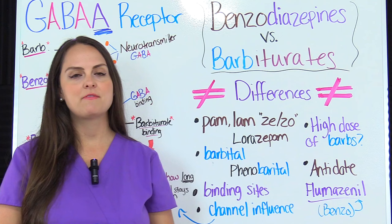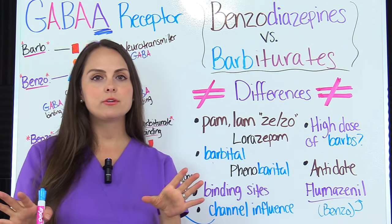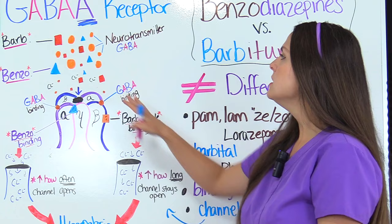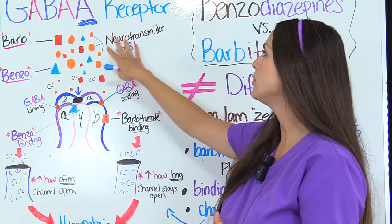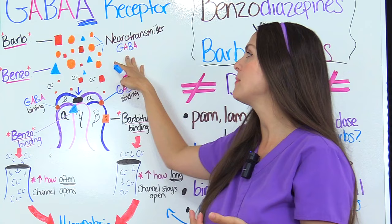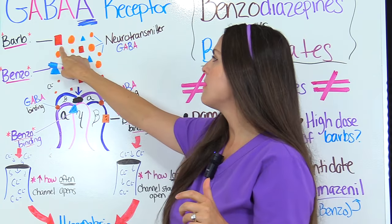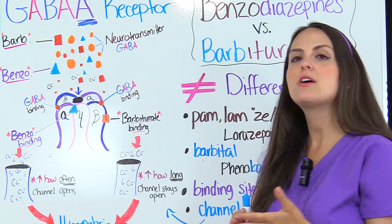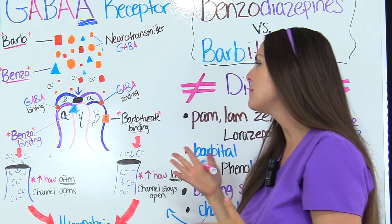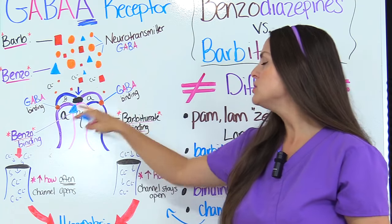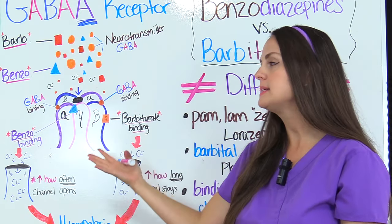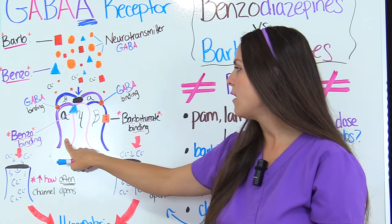Now let's talk about their mechanism of action. I pointed out in the similarities that they both influence the GABA-A receptor, so let's talk about their binding sites and how they influence that channel. Here in this illustration, we have our neurotransmitter GABA, because we know that these medications enhance GABA. We have barbiturates and benzos. The GABA-A receptor is made up of five subunits: two beta subunits, two alpha, and one gamma subunit. The benzodiazepine binding site is found between the alpha and the gamma subunit. We also have a binding site for GABA, found between the alpha and the beta subunit.